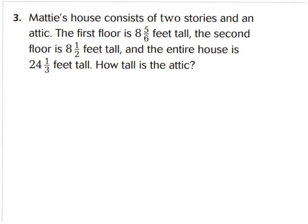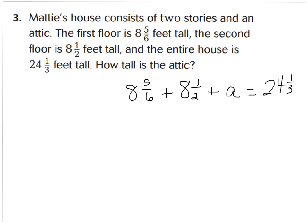For number three, it says: Maddie's house consists of two stories and an attic. The first floor is eight and five-sixths feet tall. The second floor is eight and a half feet tall. The entire house is twenty-four and one-third feet tall. How tall is the attic? We want to find A for attic, which all together equals twenty-four and one-third. I like the strategy of combining what you know and then subtracting from the total to get the attic value.